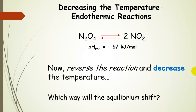Now let's mix it up. Let's reverse the reaction — write it in the reverse direction, so dinitrogen tetroxide is now in equilibrium with nitrogen dioxide as the product. When we reverse the reaction, we change the sign on the enthalpy: delta H becomes positive. And now we're also going to decrease the temperature. Pause the presentation and figure out which way this equilibrium is going to shift.